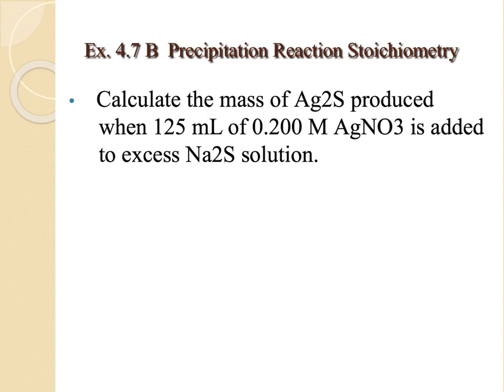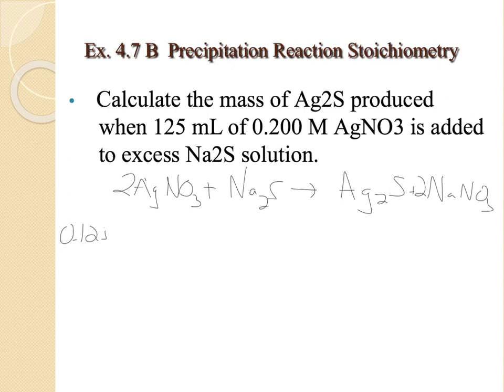When we get to reaction stoichiometry, we can do really similar things in solution that we just do with grams and molar masses, except we also have molarities. So a problem like this says, calculate the mass of silver sulfide produced when silver nitrate is added to sodium sulfide. So let's get a balanced equation really quick. We get silver sulfide and sodium nitrate. We're going to need two of those, and we'll get two of those. So 0.125 liters, 125 milliliters of solution.